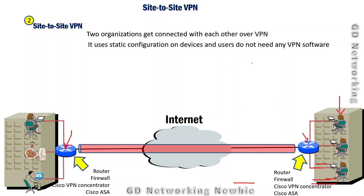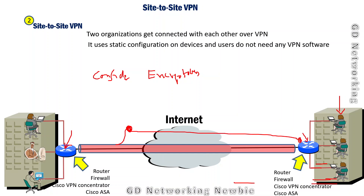This tunnel — in any VPN setup — provides us confidentiality. Confidentiality means the information will be hidden through encryption. The tunnel also ensures that nobody can change the contents of the message in transit; if any changes occur, they will be detected and that message will not be accepted. This component is called integrity: ensuring the message has not been changed from source to destination.